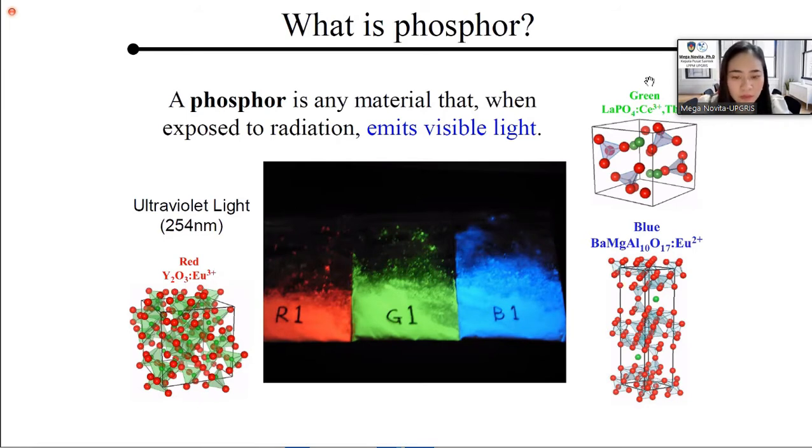Here are the examples of compounds. In a normal condition, it appears just white, like sugar. However, when they are exposed by UV light in 254 nanometers, they emit different colors like this.